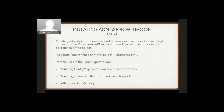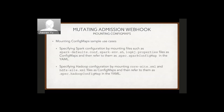The mutating admission webhook is a Kubernetes feature — not the operator itself — but the Spark Operator leverages it to enable flexible pod customization. It's a so-called admission controller that intercepts requests to the API server and modifies an object before it's persisted. It's a beta feature in Kubernetes 1.9 and above. The Spark Operator uses it mainly for three use cases: mounting ConfigMaps in driver and executor pods, mounting volumes, and setting pod affinity and anti-affinity.